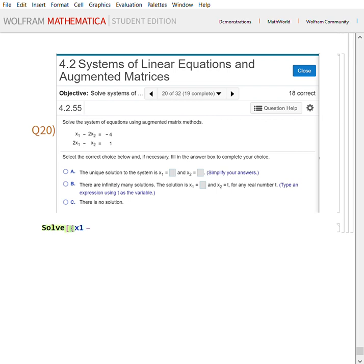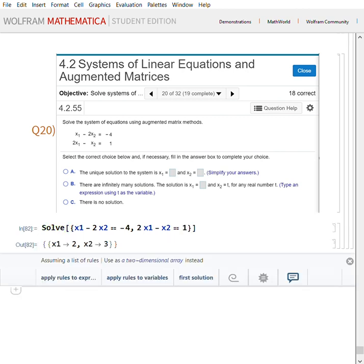So x1 minus 2x2 equals minus 4, then comma, 2x1 minus x2 equals 1. Close the curly bracket, big bracket, Shift+Enter. And you have a unique solution to the system, which is x1 equals 2 and x2 equals 3. Done. Check your answer and the answer is correct.